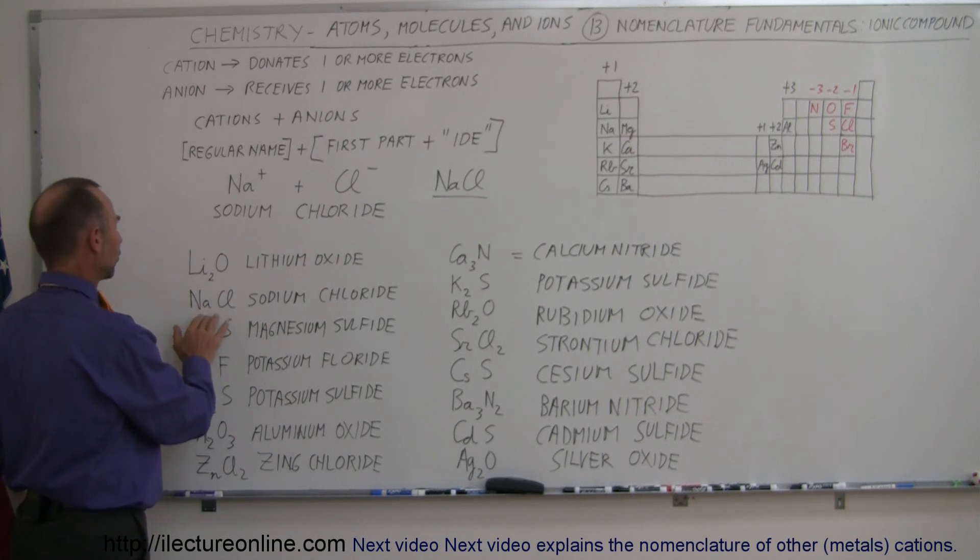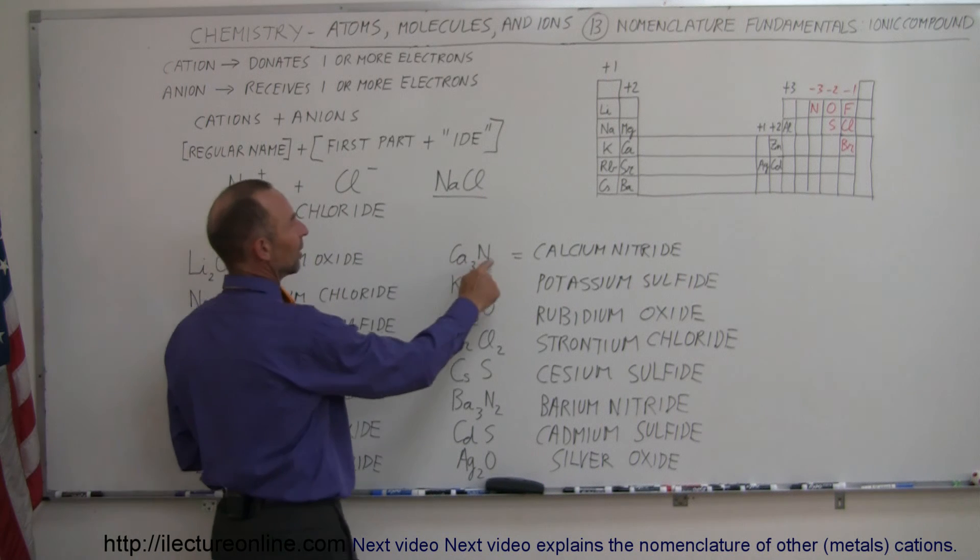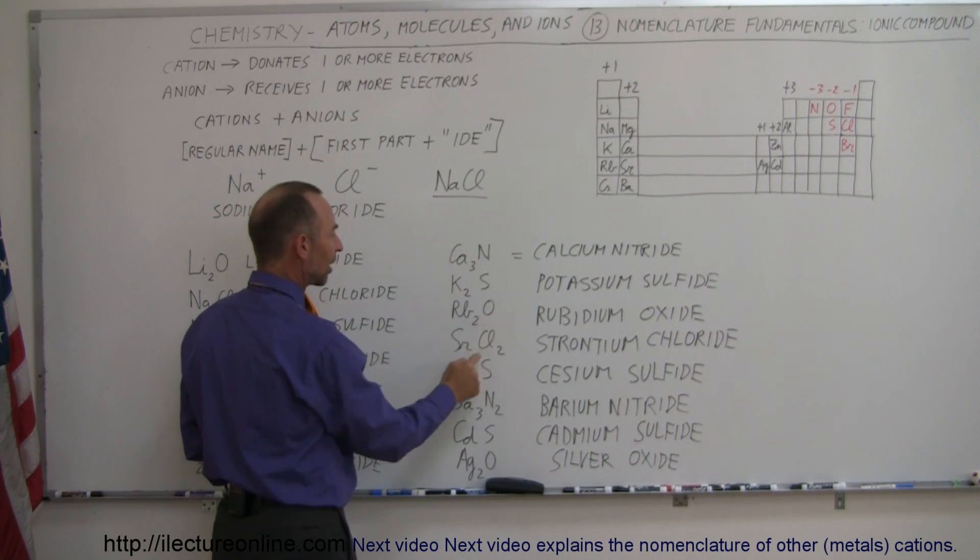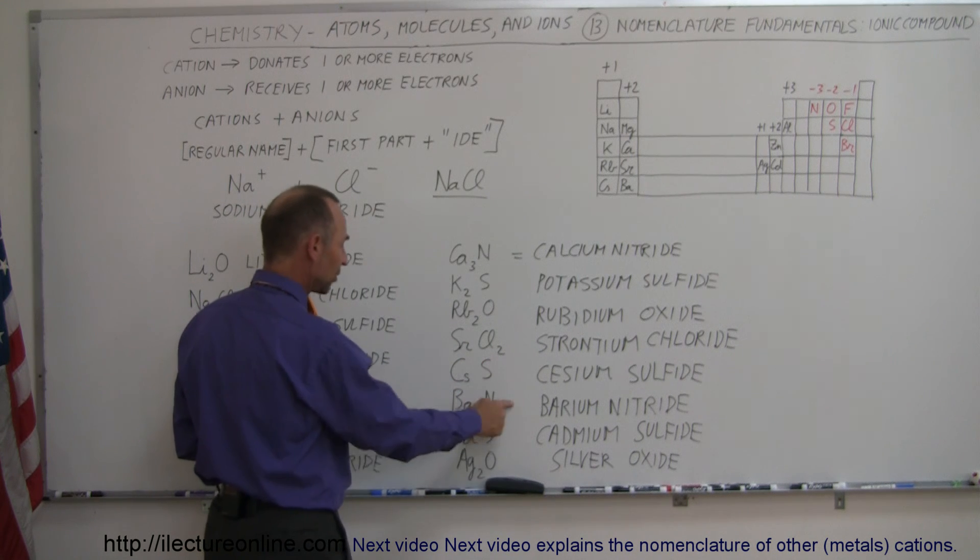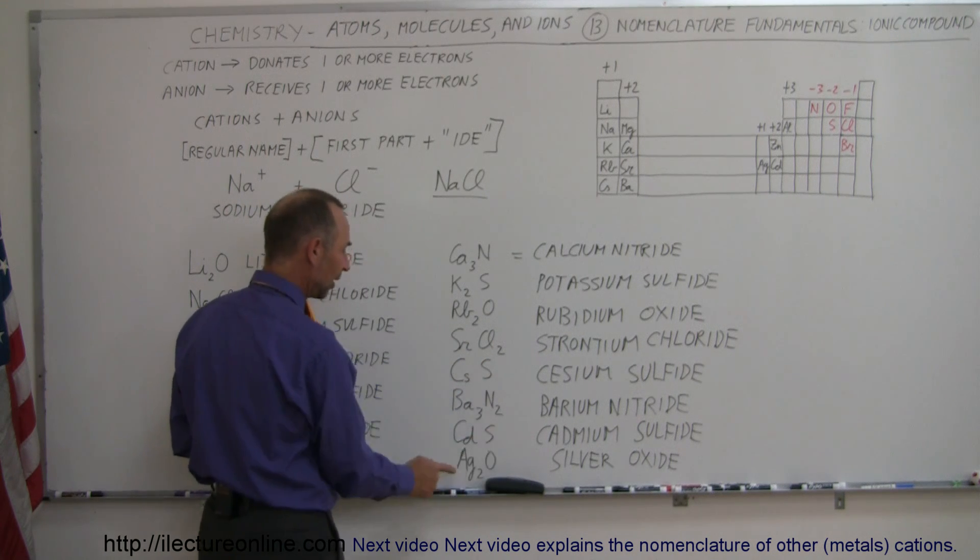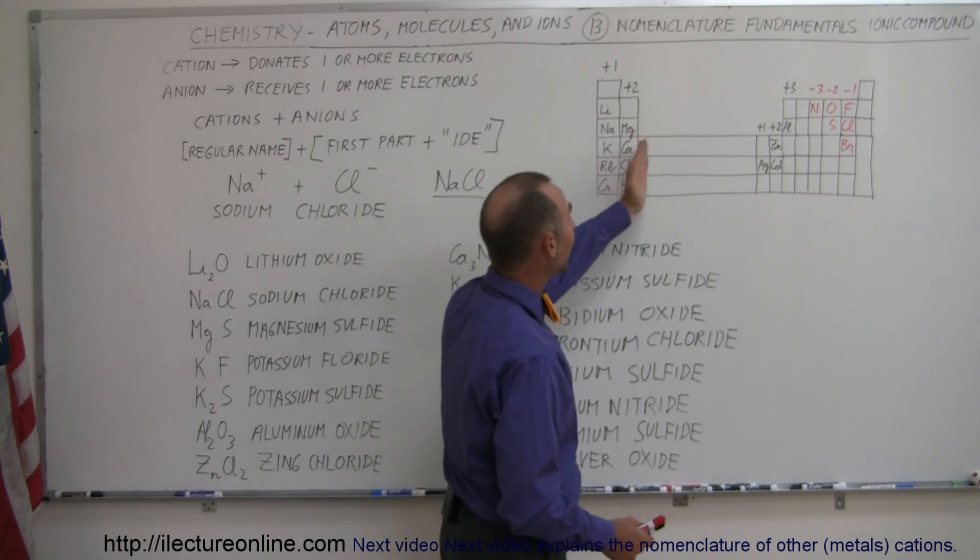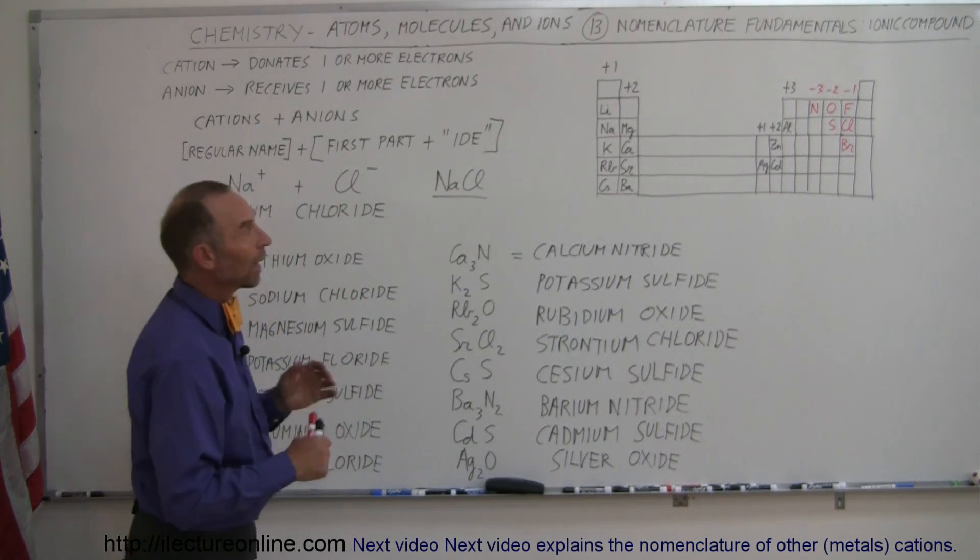So there you have the way we name these simple ionic compounds, the ones where there's only one option in how they will become ionized. When they then combine, there's only one way in which they can combine, so we don't have to worry about if there's two or three or one of each. Here we simply know: lithium oxide, sodium chloride, magnesium sulfide, potassium sulfide, aluminum oxide, zinc chloride, calcium nitride, rubidium oxide, strontium chloride, cesium sulfide, barium nitride, cadmium sulfide, and silver oxide. All you have to do here is realize where they came from and how they can ionize, and there's only one way for those.